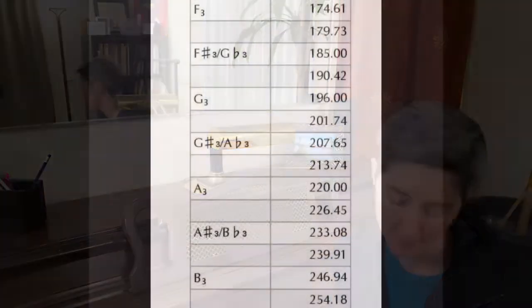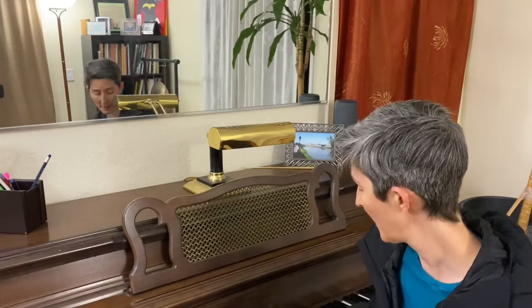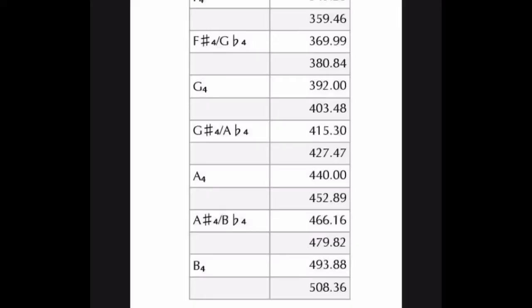If I were to play a low G sharp to an A, that's a half step. That low G sharp cycles at 207.65 Hertz, while the A is at 220. If I go up an octave, that G sharp is at 415.30 and the A is at 440. That's a difference of 24.7.